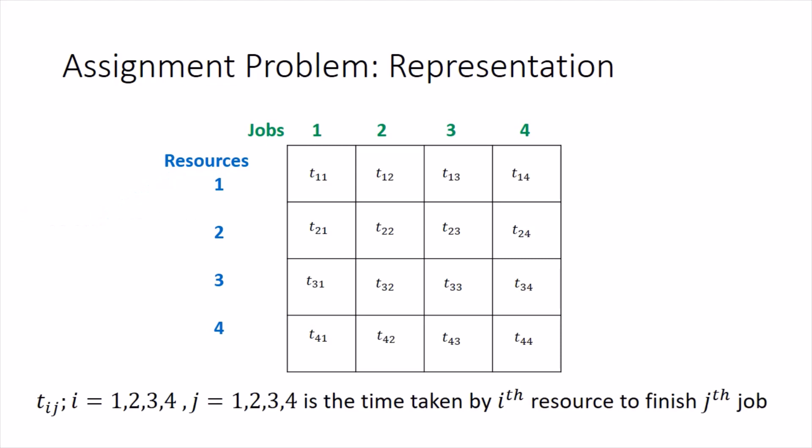What additional information will be given to us is that the time taken to complete the job, time taken by i-th person to finish the j-th job is denoted by t_ij. For example, t_11 denotes the time taken by first person to complete first job and similarly all others are the times.